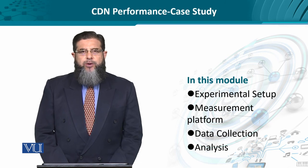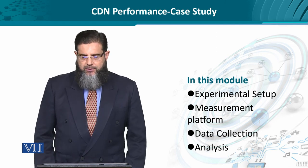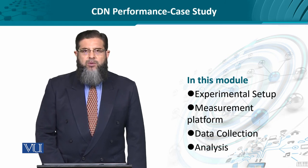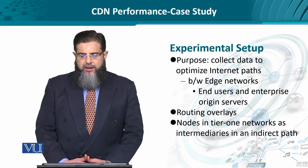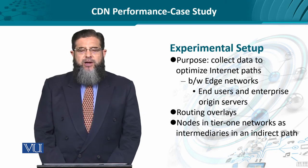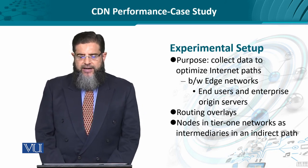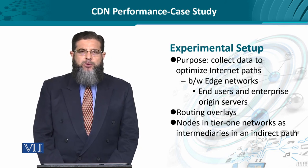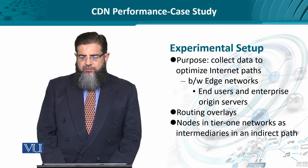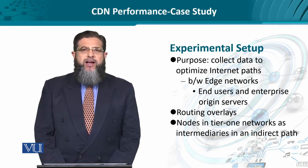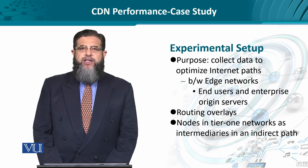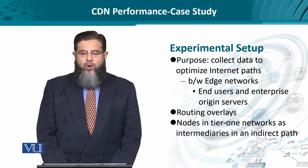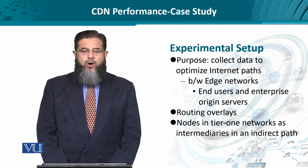This experimental setup is used to create data which is then analyzed to derive findings. The setup collects data to compare the shortest paths and the indirect paths based on overlay between edge networks. Edge networks are tier 3 or tier 4 networks residing either on the customer end or at the enterprise origin servers.